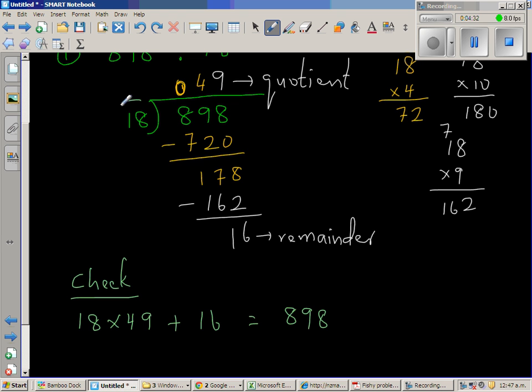This is called the divisor. This is called the dividend. The relation between divisor, quotient, dividend and remainder is: divisor times quotient plus the remainder should give you the dividend. So let us try 18 times 49 plus 16.